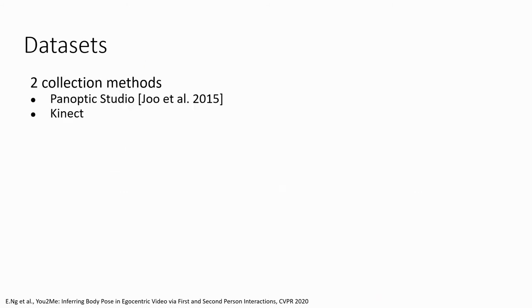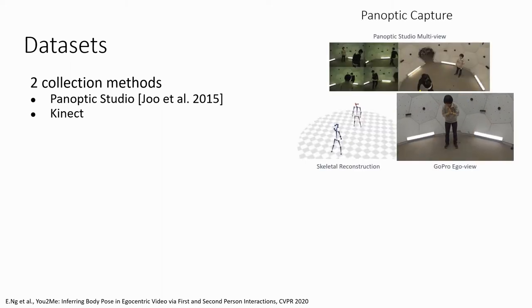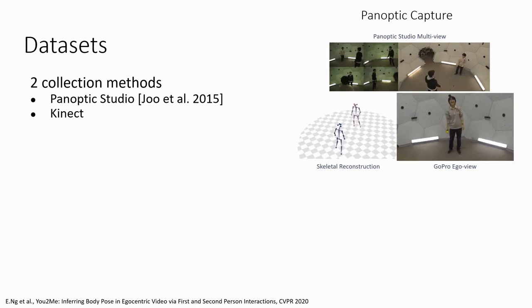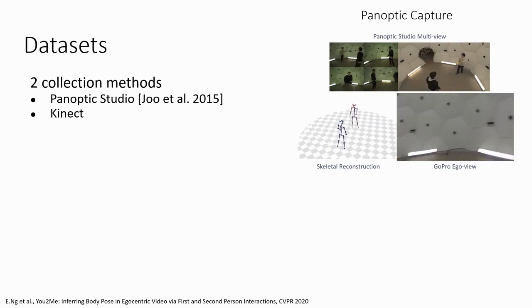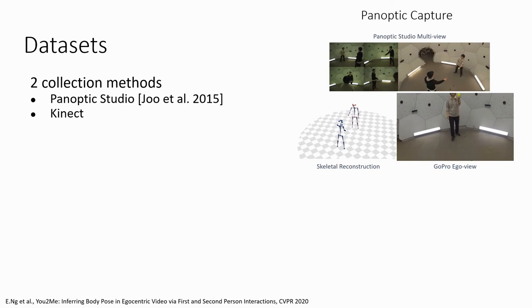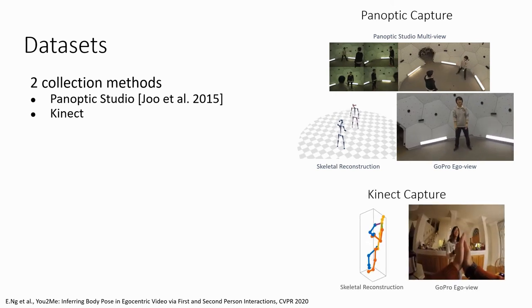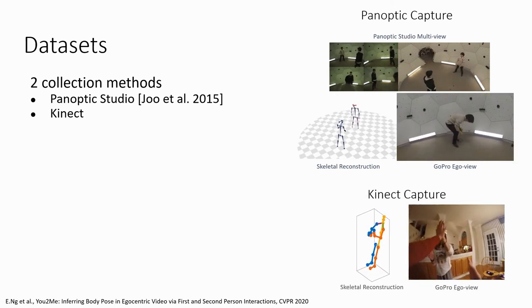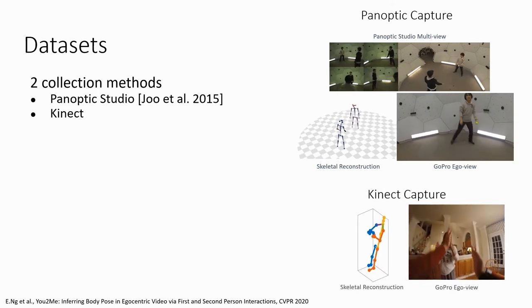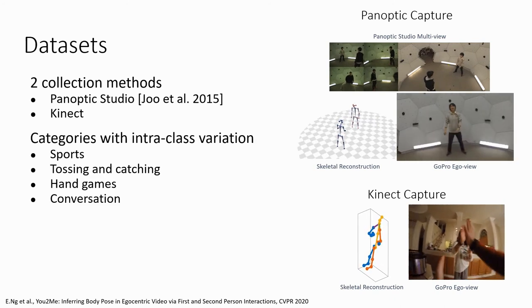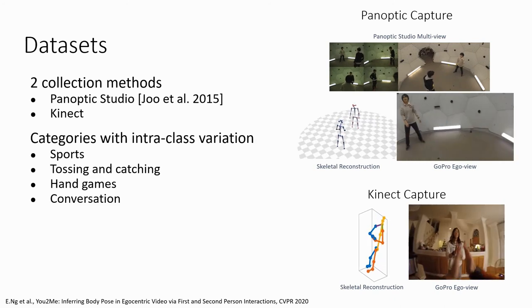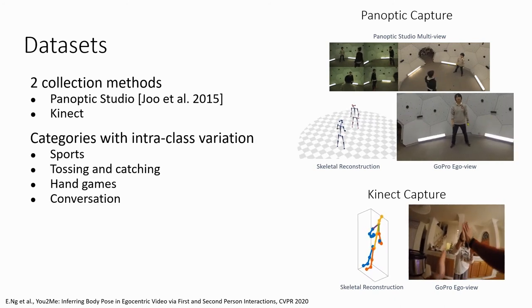To train and test our method, we introduce a novel dataset consisting of two collections. Our Panoptic Studio collection contains highly accurate ground truth skeletons, but were taken in a limited setting. We therefore also provide an in-the-wild dataset captured by two Kinect sensors. Each collection contains enactments from different activities that are conducive to dyadic interactions.